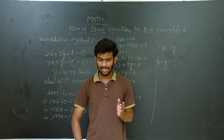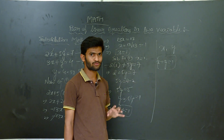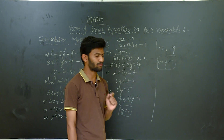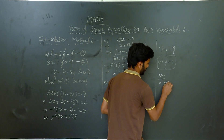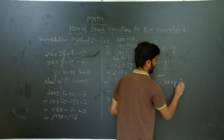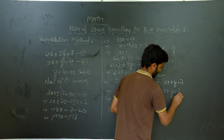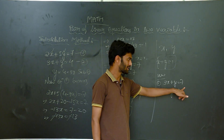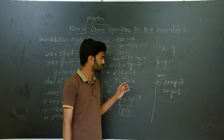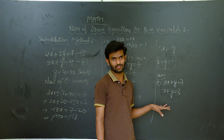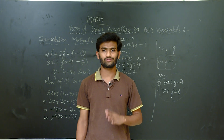I hope you understood this video. I will give you a homework: solve the equations 3X plus Y equals 7 and X plus Y equals 3 using the substitution method, and put your answer in the comment box. Thank you guys — support my channel and try to share with your friends. Thank you.